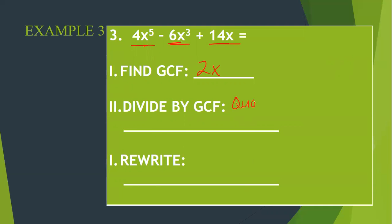Now I'm going to find my quotient. So I divide by my GCF. 4 divided by 2 is 2. x to the 5th divided by x to the 1 is x to the 4th. 6 divided by 2 is 3. x to the 3rd divided by x to the 1 is x squared. 14 divided by 2 is 7. And x to the 1 divided by x to the 1 is going to cancel each other out.